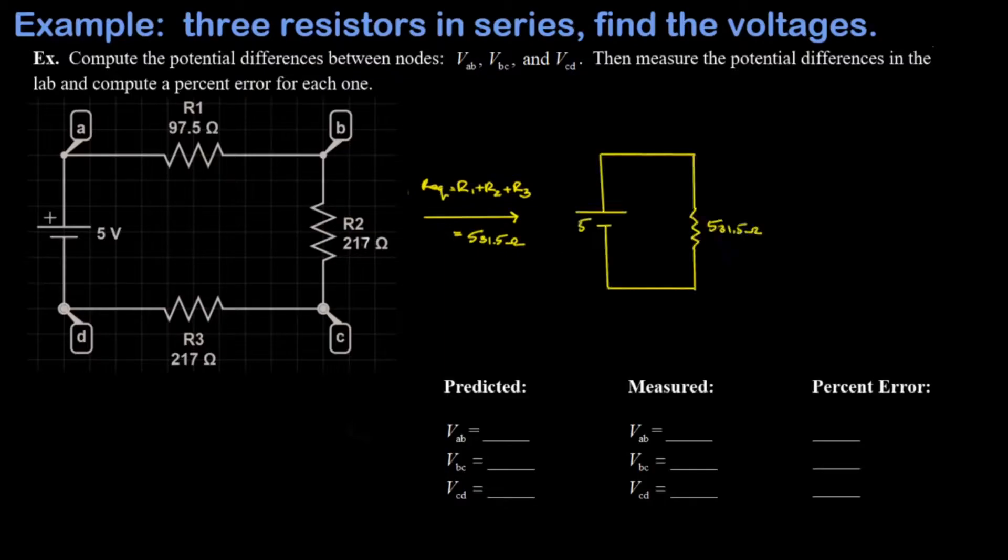Then we redraw the circuit with the equivalent resistance and the point of this simplification is that it allows you to solve for the total current flowing through the circuit, and then we'll start working our way backwards. So the total current is just given by V over R now that I have a simple power source and a single resistor, and that's 5 over 531.5, and I find that the current flowing in the circuit is 0.00941 amps.